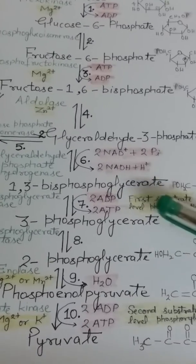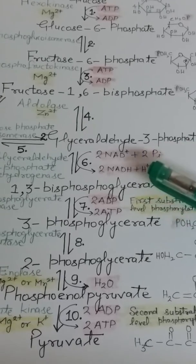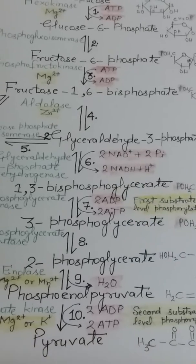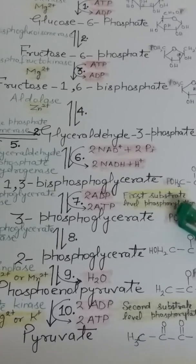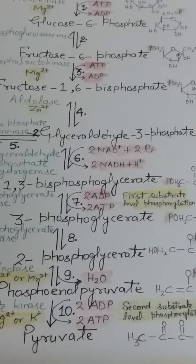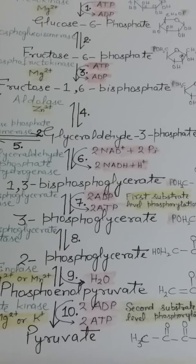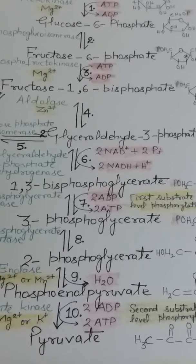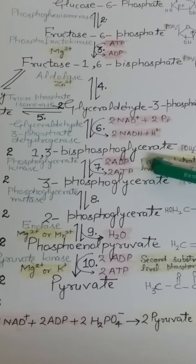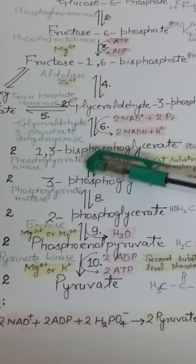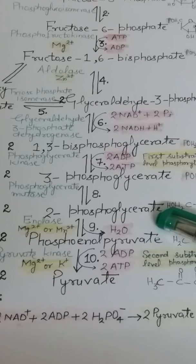In step 7, a high-energy phosphate group is transferred from 1,3-bisphosphoglycerate to ADP. This formation of ATP is referred to as substrate-level phosphorylation — this is the first substrate-level phosphorylation in glycolysis. It is called substrate-level phosphorylation because the phosphate donor, 1,3-bisphosphoglycerate, is a substrate with high phosphoryl transfer potential. This step is catalyzed by the enzyme phosphoglycerate kinase.